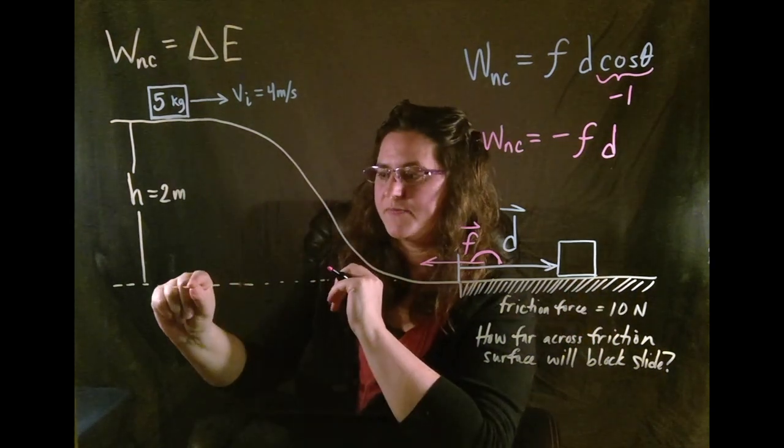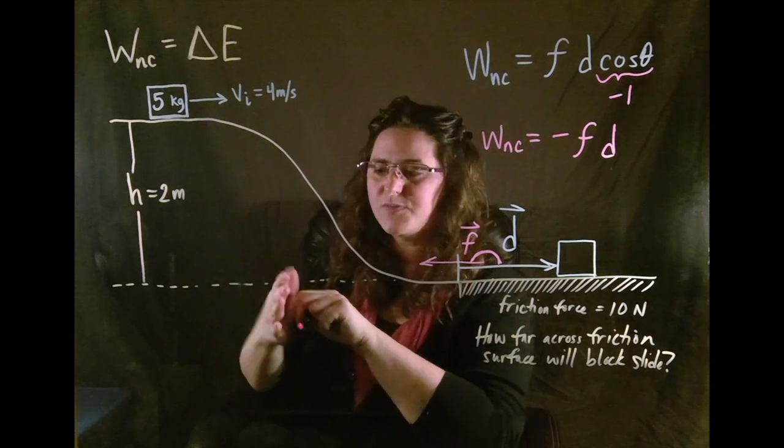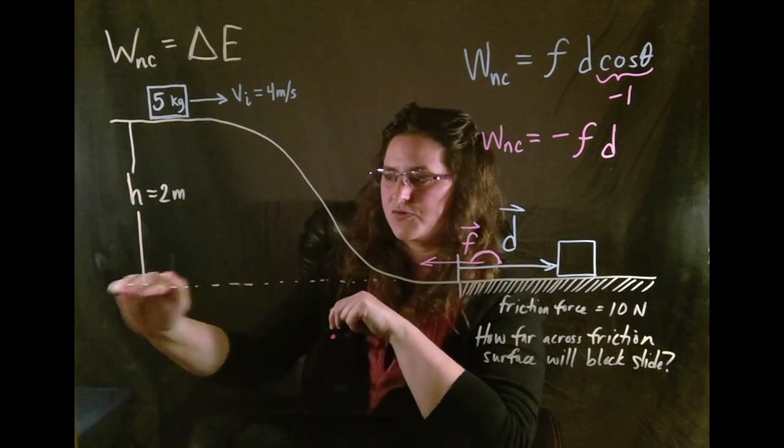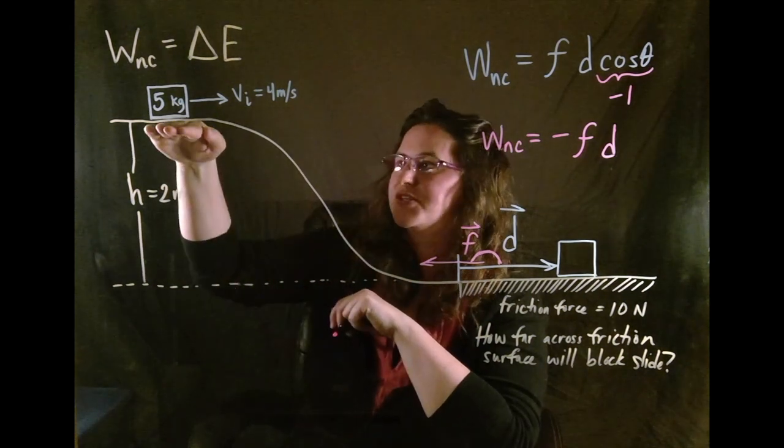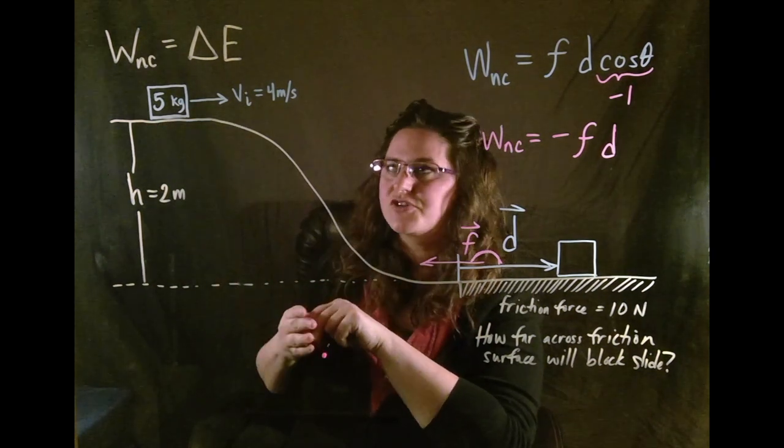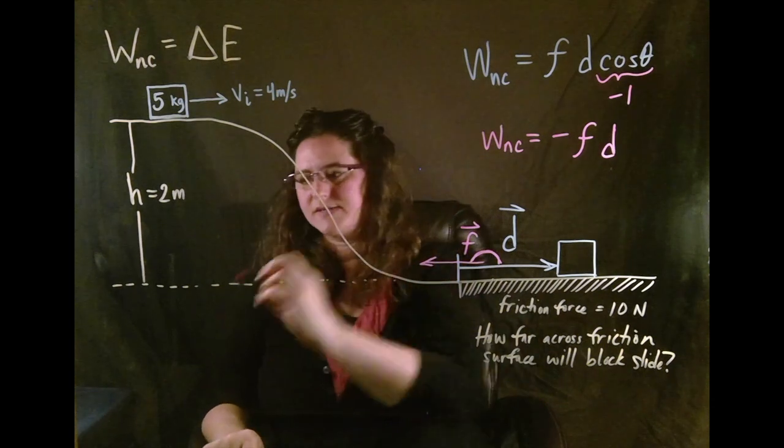The initial system has a potential energy because let's put our zero potential gravitational potential energy here. And so we are up by two meters. So our initial energy in the system is, let's see,